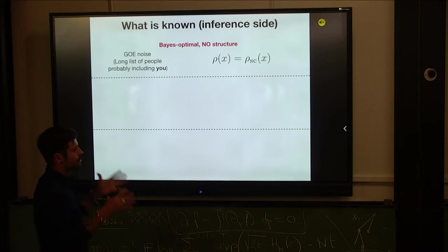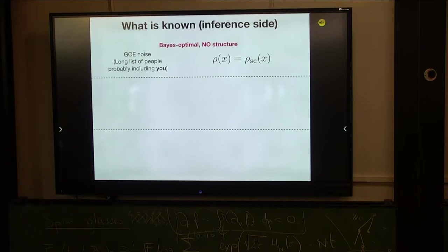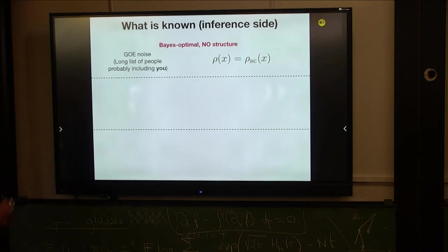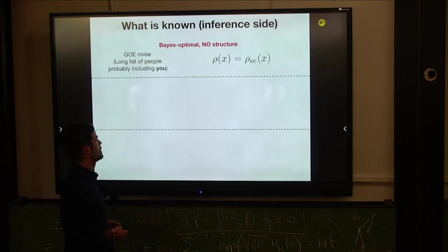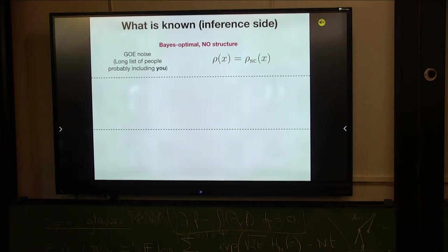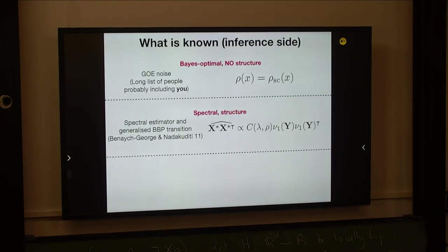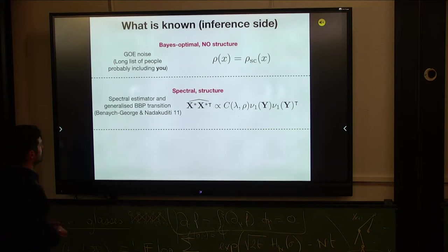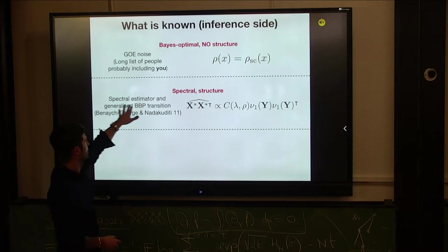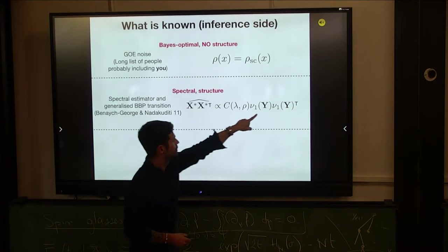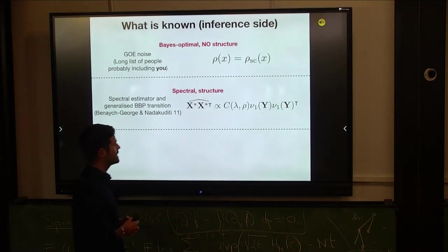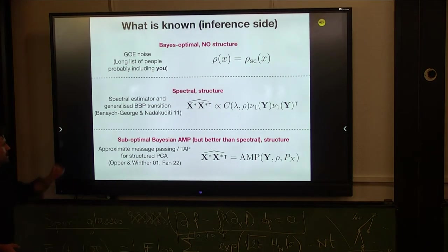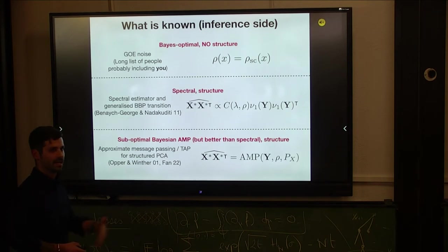So what is known from the inference side? In the Bayesian optimal setting without structure, meaning that the noise is really Gaussian orthogonal and symbol, independent entries, we know essentially everything. Rho is the semi-circle law and we have a long list of people that have worked on this. When you consider spectral algorithms in the case where you have structure, meaning the noise is of the form I presented, we also know essentially everything you may be interested in. In particular, we know the performance of the spectral estimator, which takes essentially the first eigenvector of the data and constructs this rank-one matrix with an optimal scaling factor here.